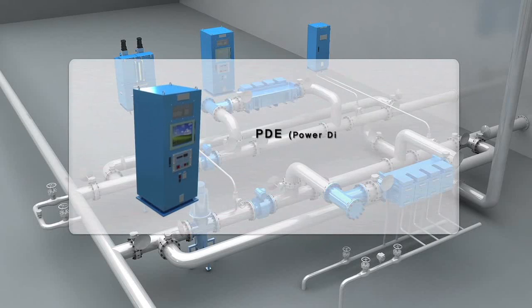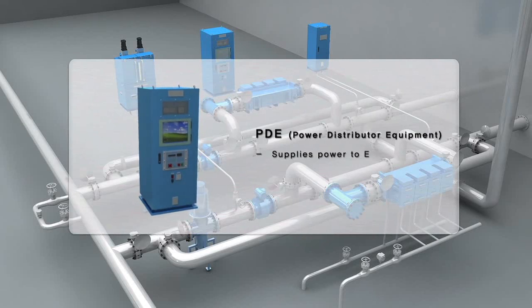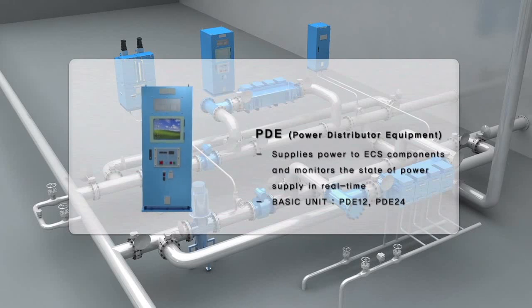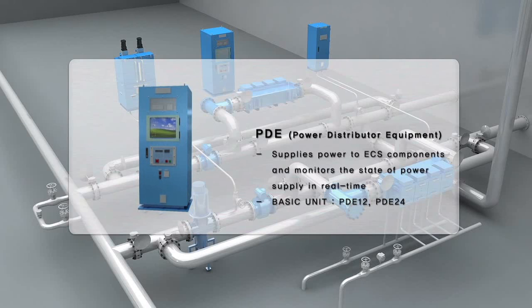PDE supplies the necessary current to the chamber after converting 440 volts AC to DC, depending upon the salinity of the water, enabling operational controls and facilitating ECS electrolysis.